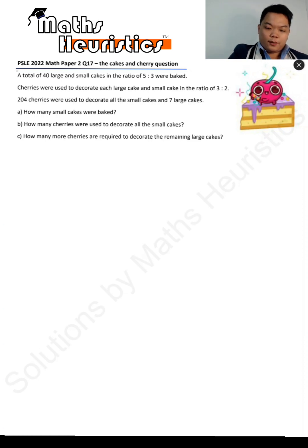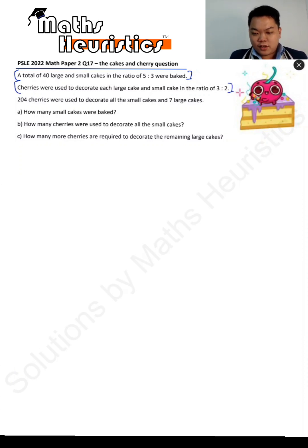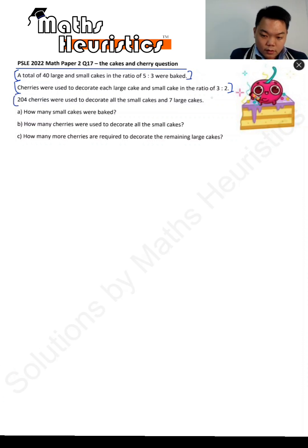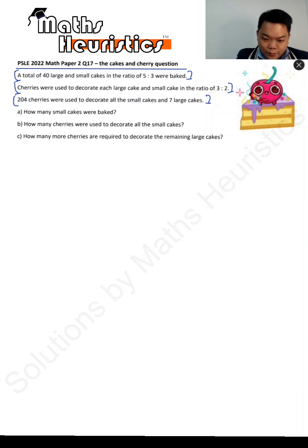A total of 40 large and small cakes in the ratio of 5 to 3 were baked. Cherries were used to decorate each large cake and each small cake in the ratio of 3 to 2. 204 cherries were used to decorate all the small cakes and 7 large cakes. How many small cakes were baked? How many cherries were used to decorate all the small cakes? And how many additional cherries are required to decorate the remaining large cakes?